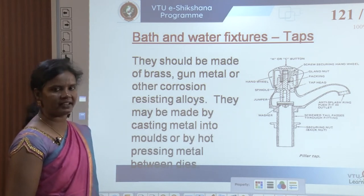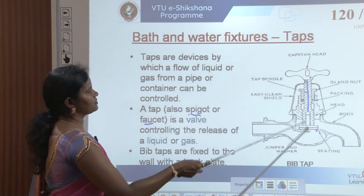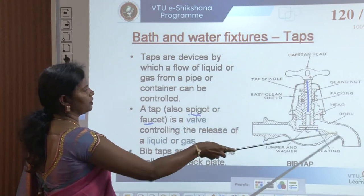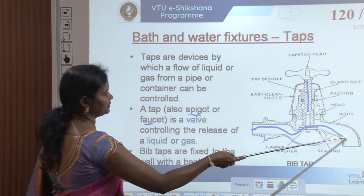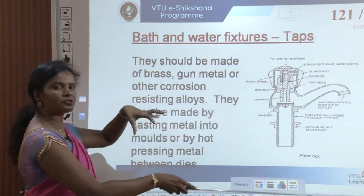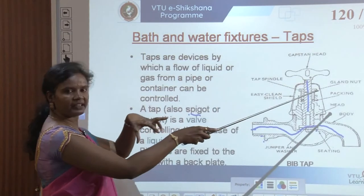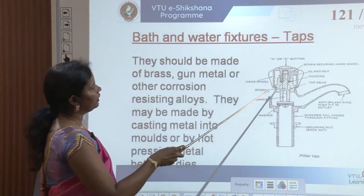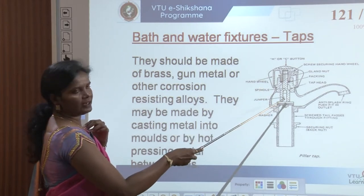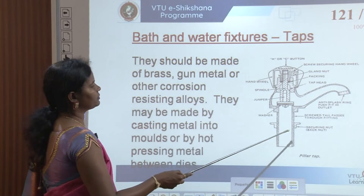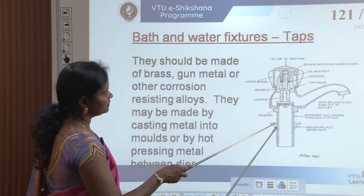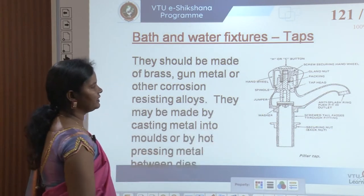This is a cross-section of a pillar tap. In the bib tap, the spindle runs throughout from the top down to the center of the tap so that when it moves the water flows. In the pillar tap, there is a smaller spindle. The top portion has a rotatable knob going up and down connected to the spindle. While rotating the knob the spindle moves up or down, and the water passes through. This is called a pillar tap.